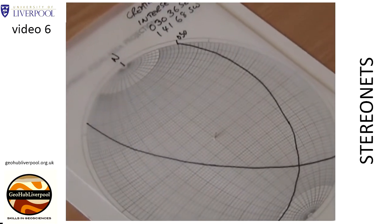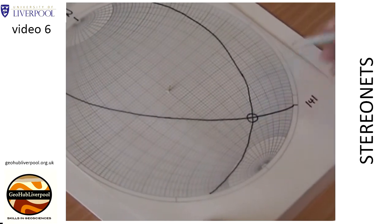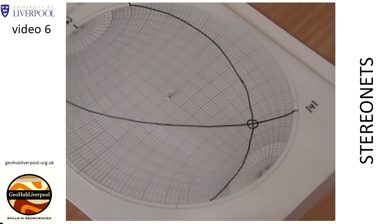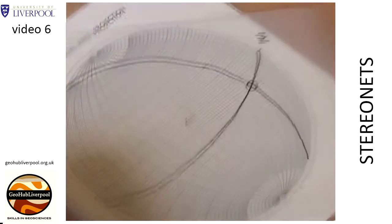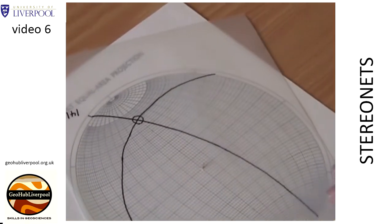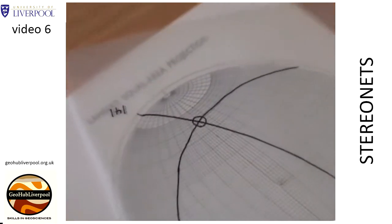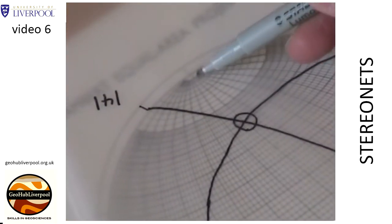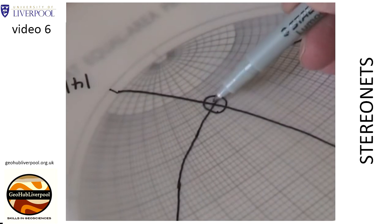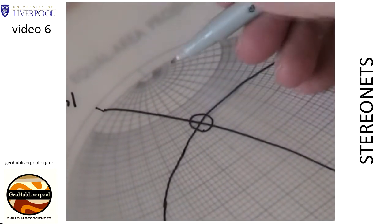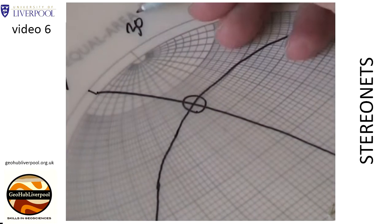Rotate the tracing paper so that the north pole is in its original position on the stereonet. Mark the intersection of the two planes. Rotate the tracing paper so that the point marking the intersection lies on the north-south line of the stereonet. Count the small circles to determine the amount of plunge of this lineation. In this case, the plunge is 30 degrees.